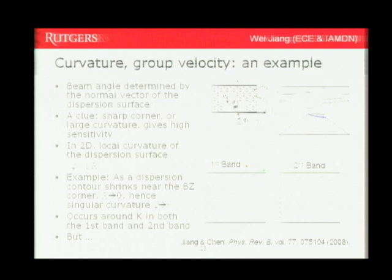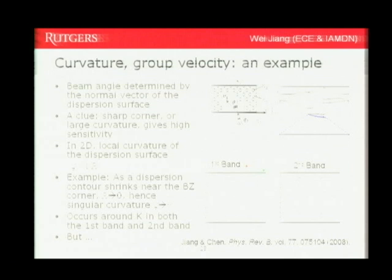You can see d theta/dn values of 10^4 to 10^5 per unit refractive index change. That means if you have a 0.1% change in refractive index, times 10^4, you get a d theta of 10 degrees — about four orders of magnitude higher than conventional materials. Furthermore, over the operating range, the transmission remains high at about 75%, and importantly, when d theta/dn goes very high, the transmission does not drop — it remains roughly constant. So the sensitivity and transmission are decoupled; you are not sacrificing transmission to get higher sensitivity.